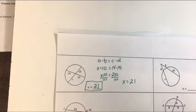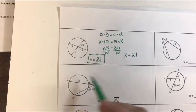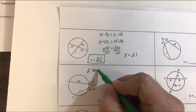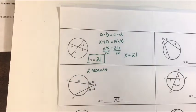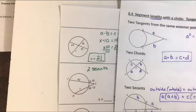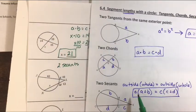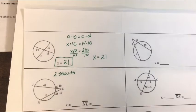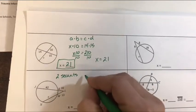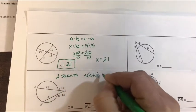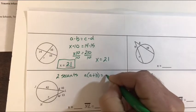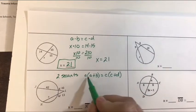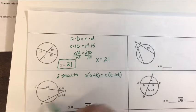Let's move on to another type of problem. On this problem we have two secants that intersect. Since I have two intersecting secants we're using this formula that outside times whole equals outside times whole, or A times A plus B equals C times C plus D. So I'm just going to plug those parts in. A and B come from one of the secants, C and D come from the other one.